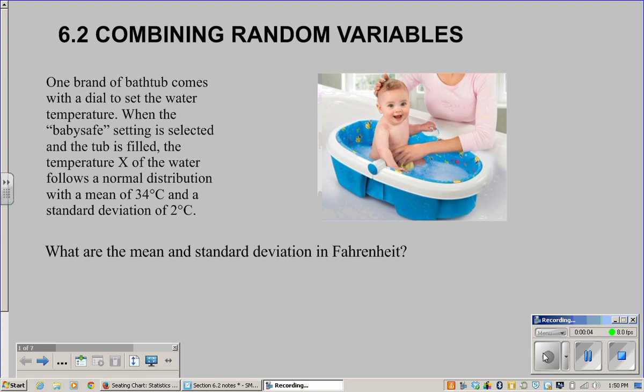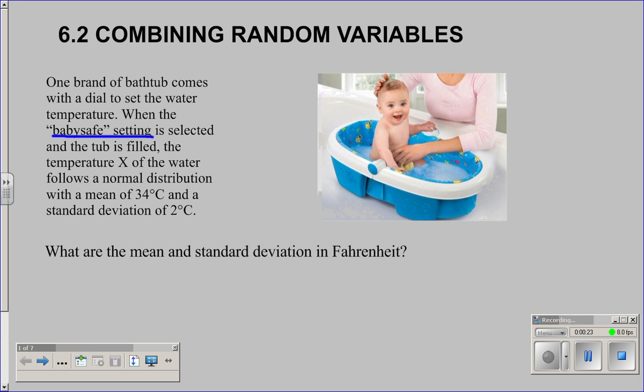This video is for section 6.2, combining random variables. This video has a couple nuggets of information that we'll be using not just in this chapter, but throughout the course, and I'll be sure to point out those important bits. Let's take a look at our first example. We have a brand of bathtub that comes with a dial to set the water temperature in baby safe mode. The temperature X of the water follows a normal distribution with a mean of 34°C and a standard deviation of 2°C.